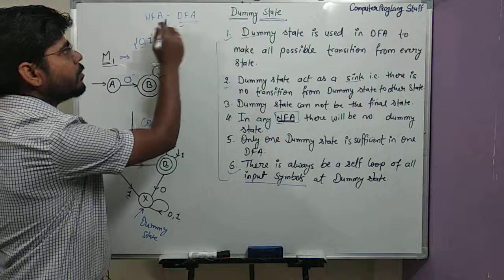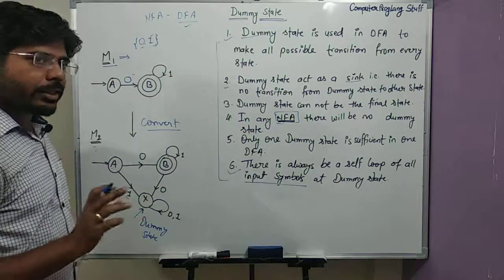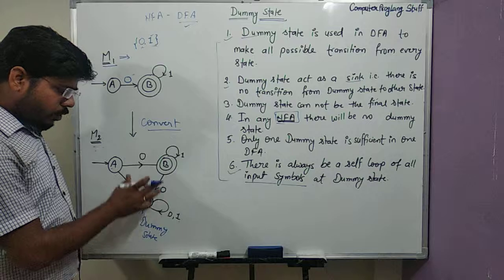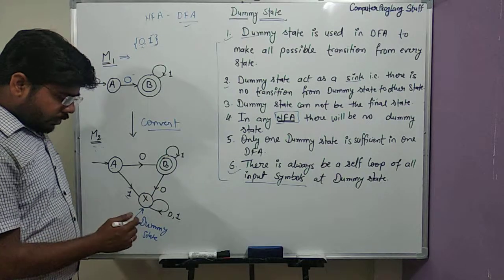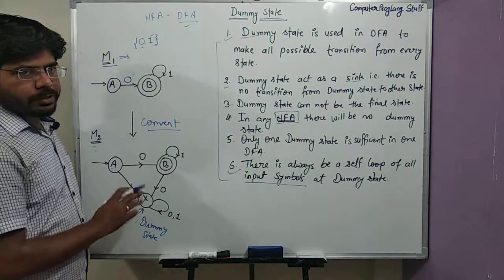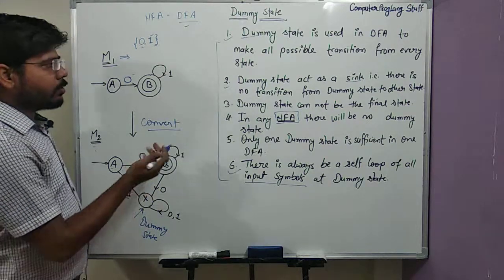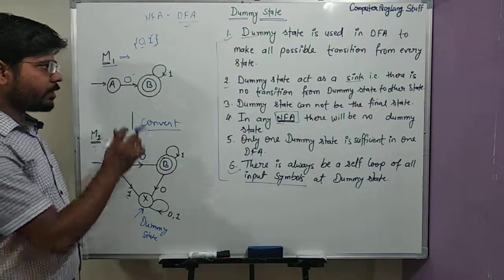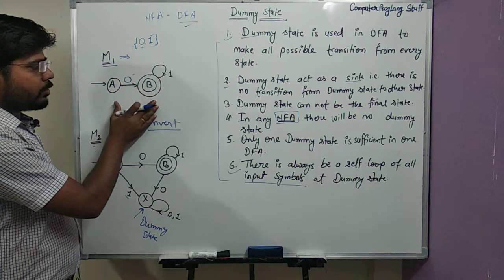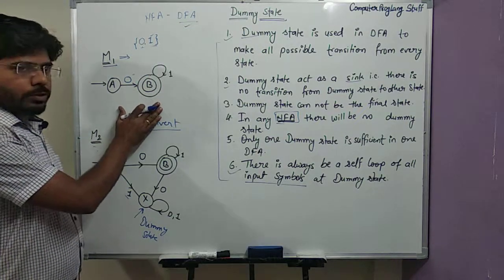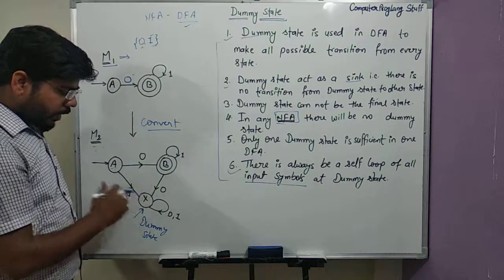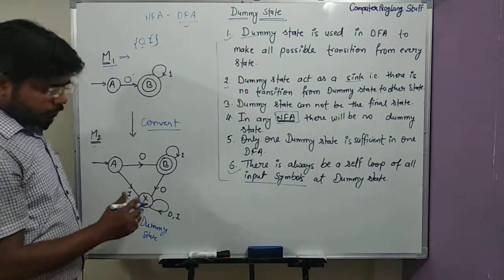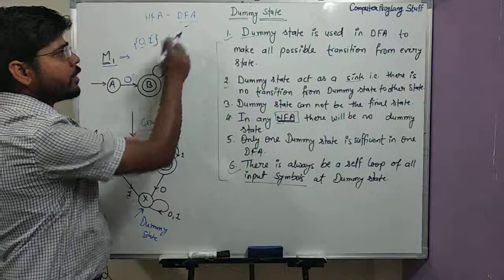If a question comes in the exam asking how many states are in the DFA when you convert from NFA to DFA, and if there is a requirement for a dummy state, always count the dummy state in the total number of states. So if you say the answer is two states, that is not correct — the correct answer would be three states, counting the dummy state.